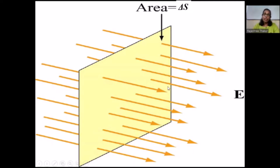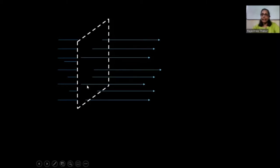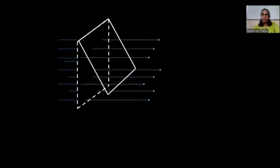Why did I say proportional and not equal to? We have already learned this. What is significant is the relative number of field lines crossing this area at different points. If I consider this plane perpendicular to the direction of electric field and consider this area as delta S, when I place this area normal to the direction of electric field, the number of electric field lines crossing this area is maximum. But if I tilt it, the number of electric field lines crossing this area is less.